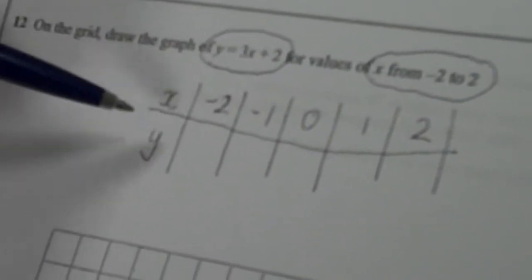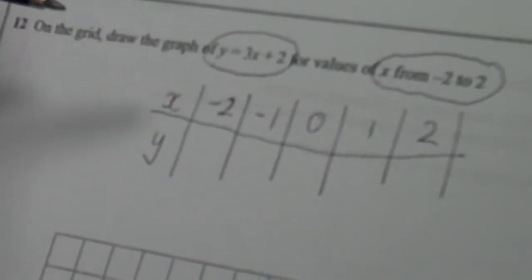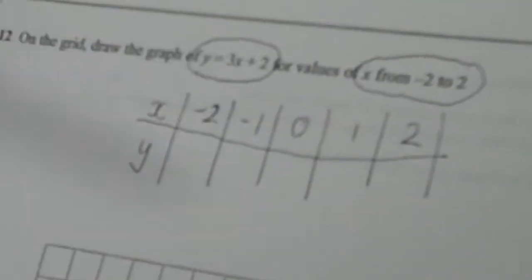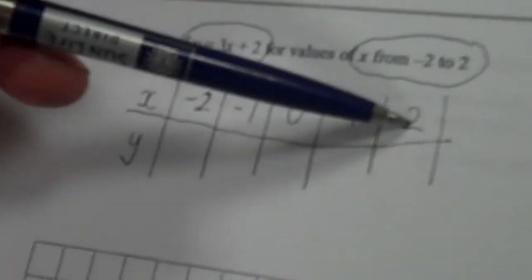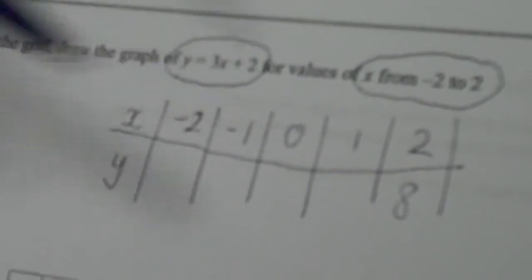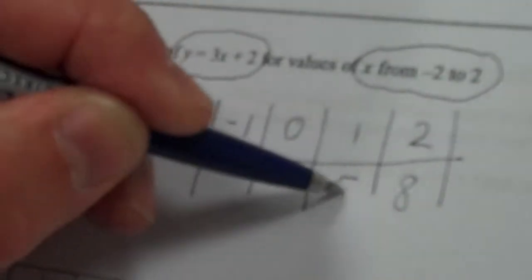Now I'll have to work out values of y and the equation tells me how to calculate these. It's best to start where the x values are positive. When x is 2, 3x will be 6 and if I add 2 to that it will be 8. So y is going to be 8. When x is 1, 3x is 3 plus 2 which is 5. When x is 0, 3 times 0 is nothing. If I add 2 to it I get 2.